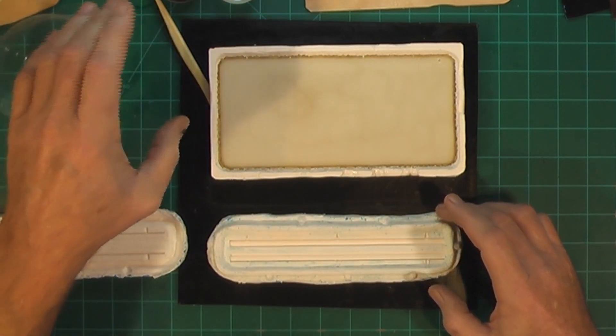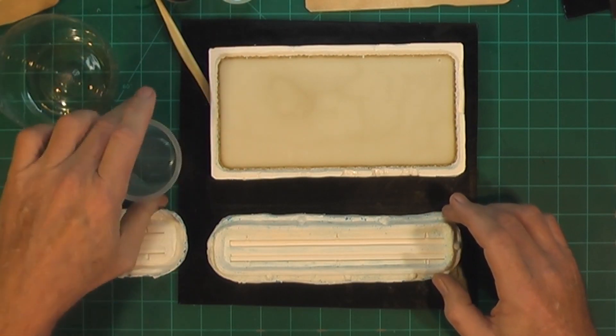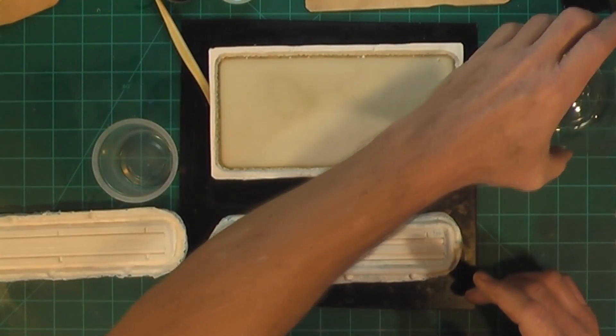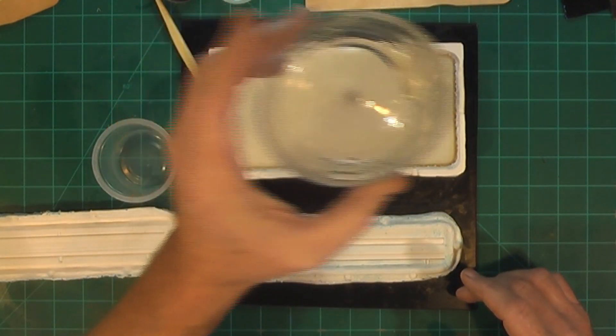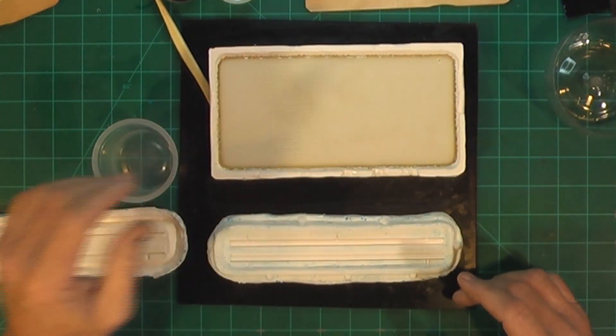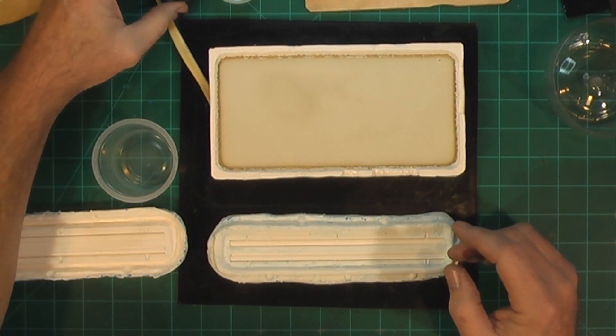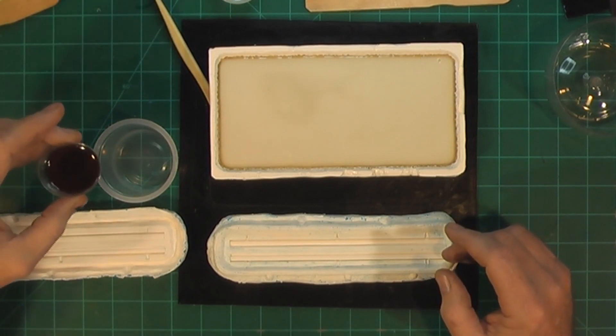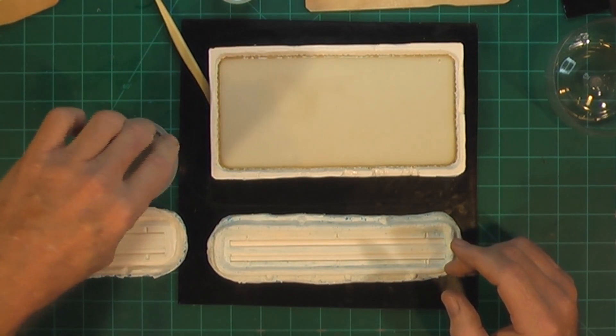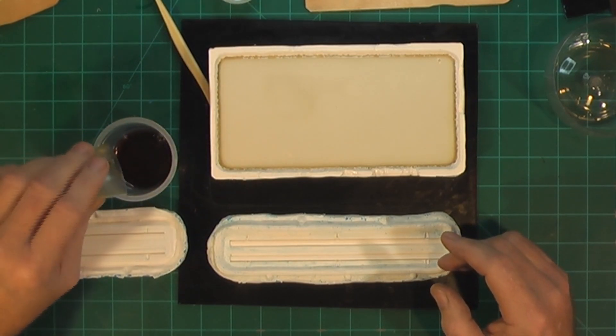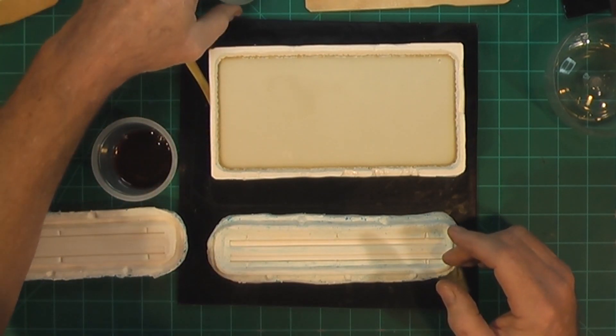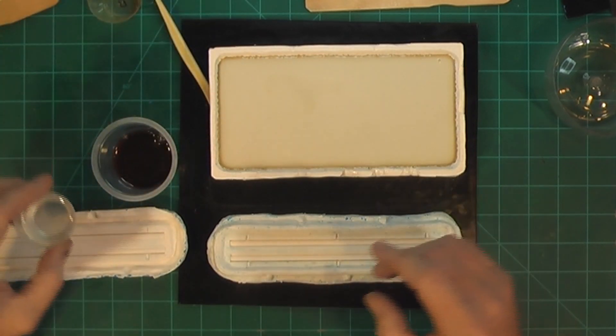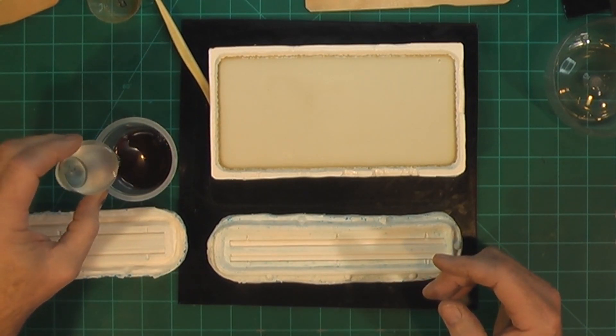Actually, I'm gonna use a smaller mix container. That'll eventually kick off in there. And when it does, this is flexible. I should be able to peel it out. Alright, so let's put in one.